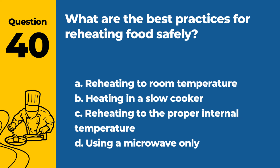Question 40. What are the best practices for reheating food safely? a. Reheating to room temperature. b. Heating in a slow cooker. c. Reheating to the proper internal temperature. d. Using a microwave only. Answer: c. Reheating to the proper internal temperature. This ensures that any harmful bacteria are killed.